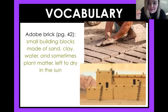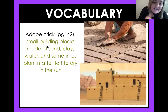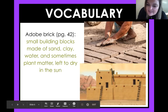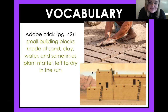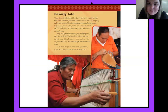Now, adobe brick. This is what those buildings were made out of in the last section we read together. Adobe brick is a small building block made of sand, clay, water, and sometimes plant matter left to dry in the sun. Here's a close-up of somebody making it. And those buildings looked the way they did because they were made of adobe brick. So let's go back to reading about the Pueblo people today.